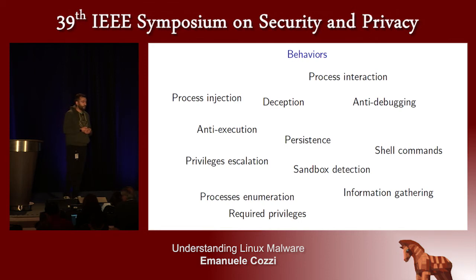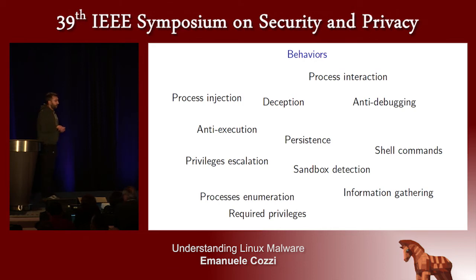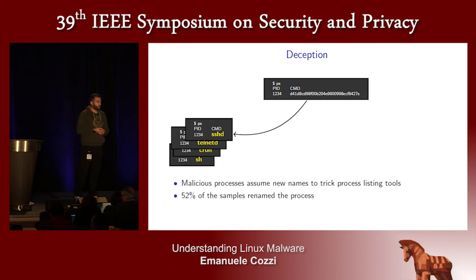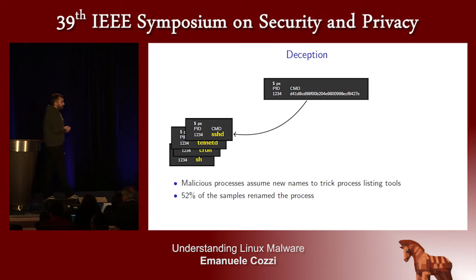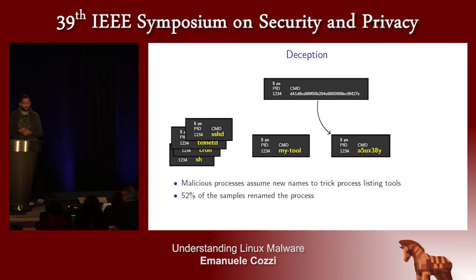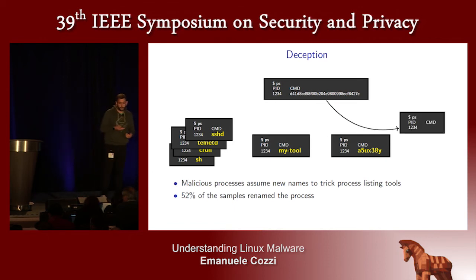For example, they apply anti-debugging tricks, persistent strategies, and process injection. One behavior is deception — malware wanting to change the process name at runtime to deceive analysts, and they are doing this on Linux. They prefer to rename the process with names of common daemons such as sh and telnet, use less suspicious names referring to user applications, take random alphanumeric strings, or act more suspiciously by completely removing the process name.